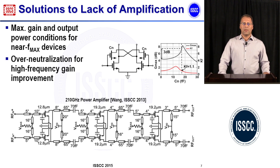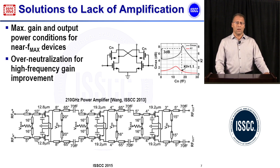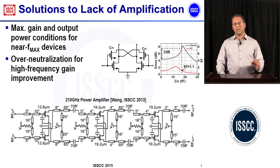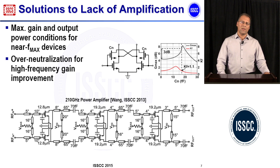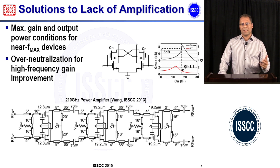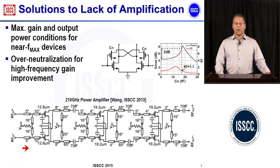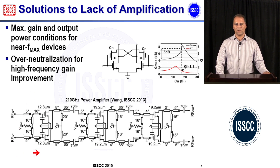Several solutions have been proposed to address the lack of amplification. One approach is to design transistor stages close to the border of their stability, then carefully design amplifiers to boost gain. Shown here is an example of a three-stage power amplifier at 210 GHz presented at ISSCC 2013, in which the authors used the so-called over-neutralization technique to boost the gain of each amplification stage and achieve higher overall gain.